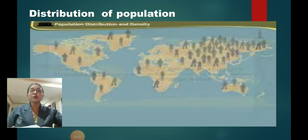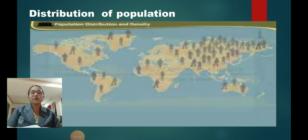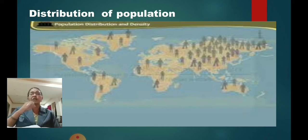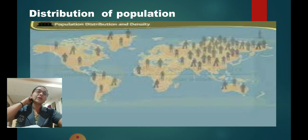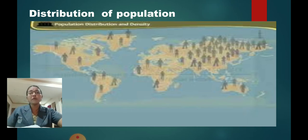Hello dear children, we are going to study about the further part of population. The further part is distribution of population. Here you can see in this map the population has been distributed. Some regions have dense population, meaning more crowd, and in some regions you will find less crowd — more number of people in some regions and less in others.